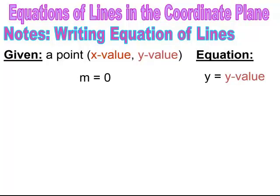If the slope is undefined, it is a vertical line, and the equation of the line is x equals whatever the x value is in the ordered pair. These are quick rules for writing equations easily just by knowing the slope condition.